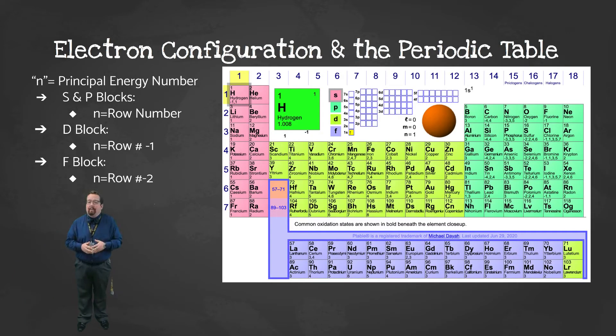You might also remember that electron configuration is directly tied to the periodic table. This is by far the easiest way to remember the order of the sublevels. The S block is the first two columns in pink here. All of the elements in the very first column will have an electron configuration that ends in S1. All of the elements in the second column will have an electron configuration that ends in S2.